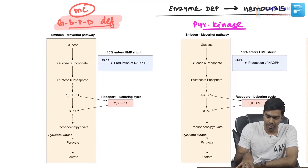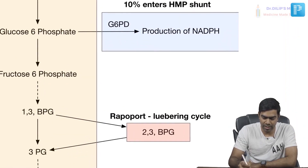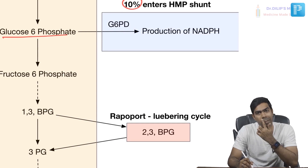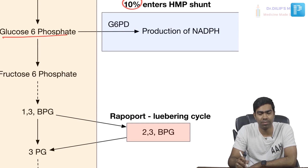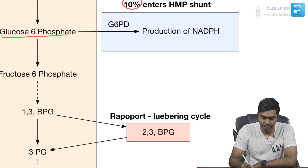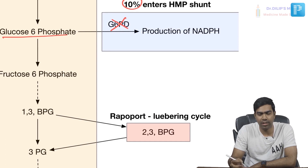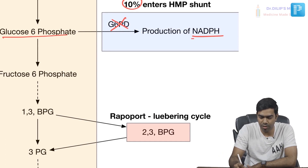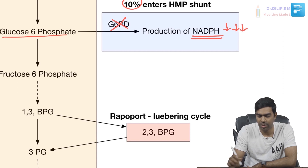G6PD is important because it relates to the Embden-Meyerhof pathway, which is glycolysis. About 10% of glucose-6-phosphate enters the hexose monophosphate shunt, the HMP shunt. The HMP shunt is critical for producing NADPH, so G6PD deficiency leads to reduced NADPH levels.